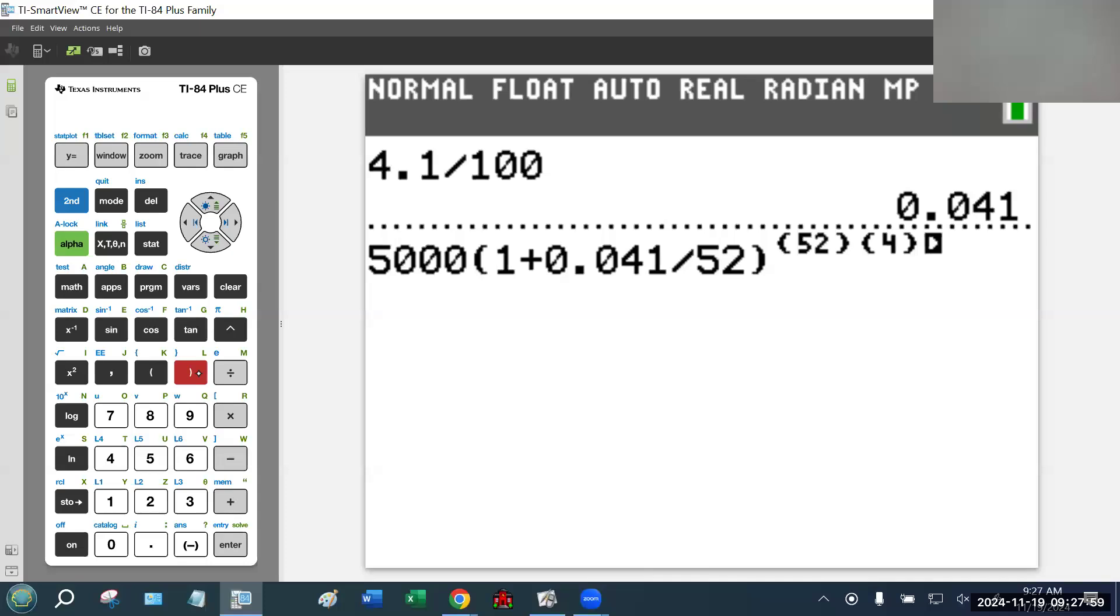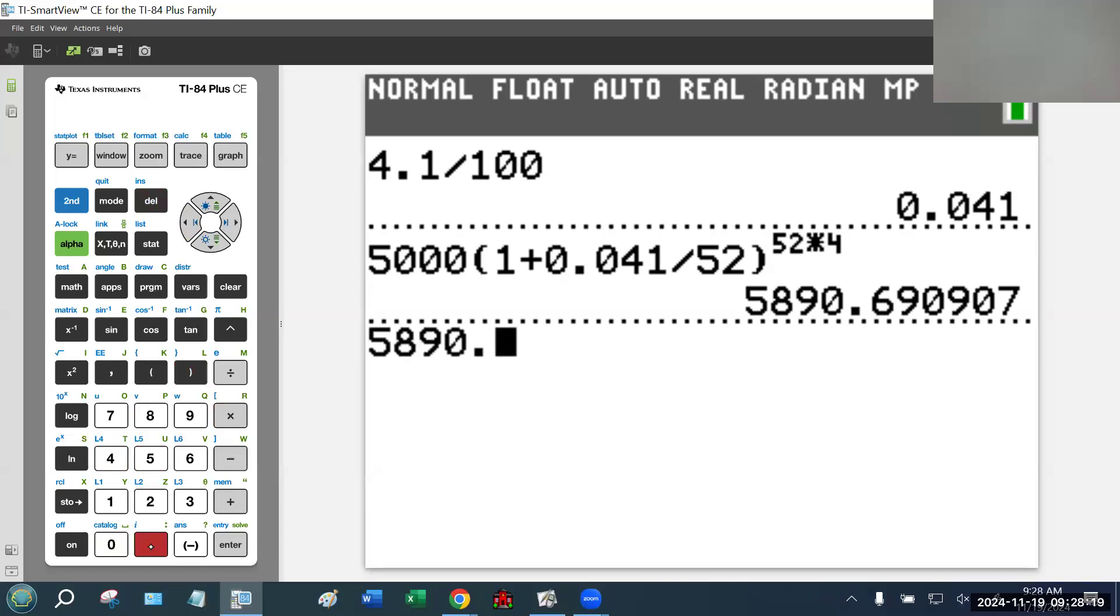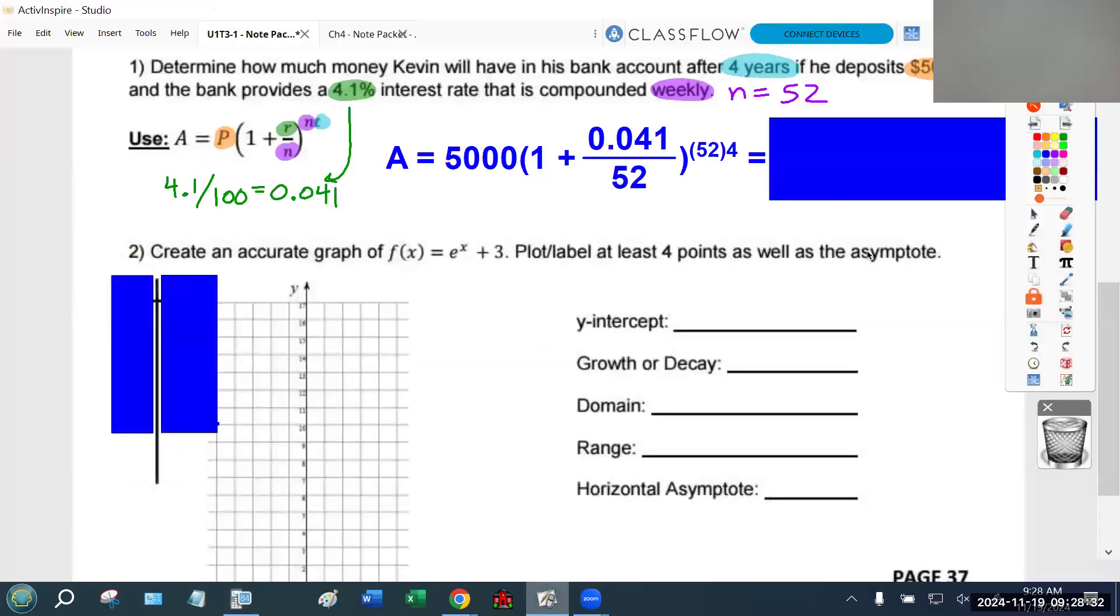A lot of students don't like the fact that I use double parentheses. That's just my way of showing the substitution. If you'd rather type it as 52 times four, that's literally the same thing. That has no effect on the mathematics. That's your final balance. Normally I'd go to three decimals, but because we're talking about money, I'll just call it $5,890.69. That is the answer I'd be looking for.